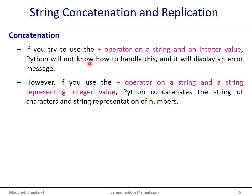If you try to use the plus operator on a string and an integer value, Python will not recognize this expression as a valid one and it displays an error message. However, if you use the plus operator on a string and a string representing an integer or floating point value, Python concatenates the string of characters of the first operand as well as the string representation of the number.